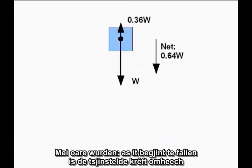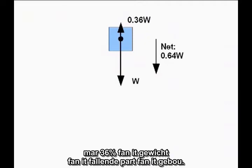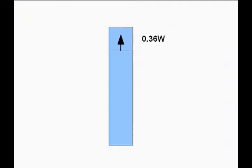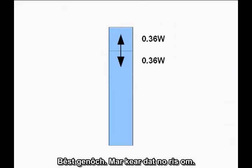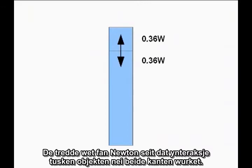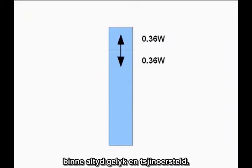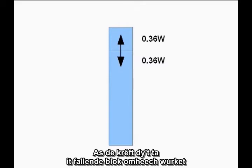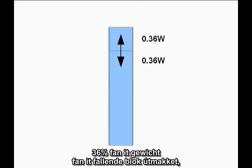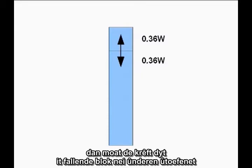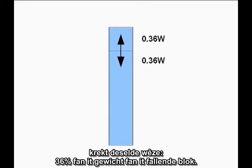In other words, once it starts falling, the upward resistive force is only 36% of the weight of the falling section of the building. But now turn it around. Newton's Third Law says interactions between objects work both ways. The forces two objects exert on each other are always equal and opposite. If the upward force acting on the falling block is 36% of the weight of the falling block, the downward force exerted by the falling block must be exactly the same — 36% of the weight of the falling block.